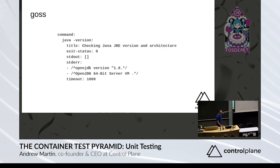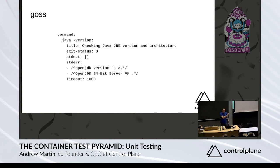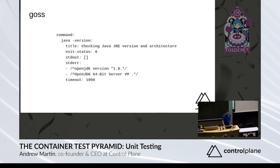This is what Goss looks like. You have a simple YAML-based format. It runs everything by default with 50 threads, or Go channels. In this case, "command" is the type of test, and the key here is a version — so we're just making sure that our base container has a contract with it, that it's shipping something to us. Obviously you can use Goss for anything and everything, and I recommend it highly.